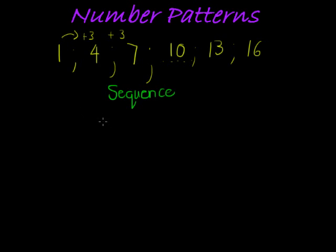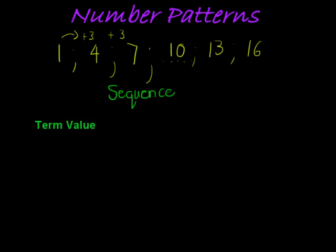In a sequence there are four things that we're going to look out for. The first thing is the term value. The term value is the value found at a certain position. For example, the second term is 4, and we write T2 equals 4, which just means that the second term is equal to 4.